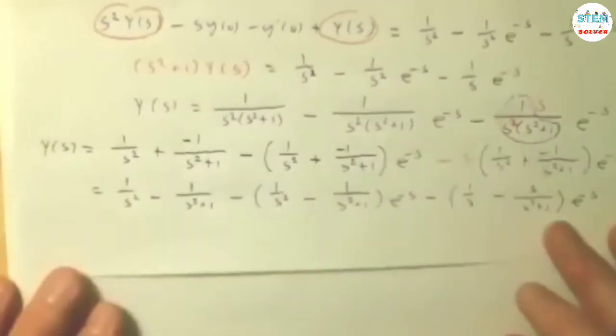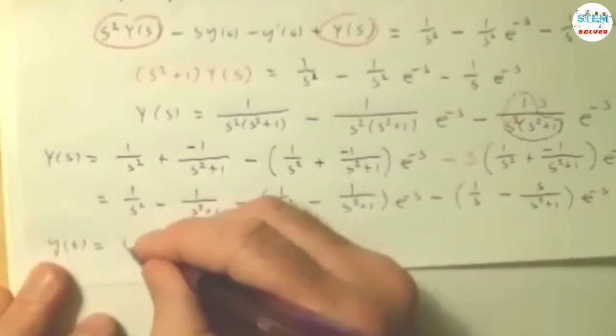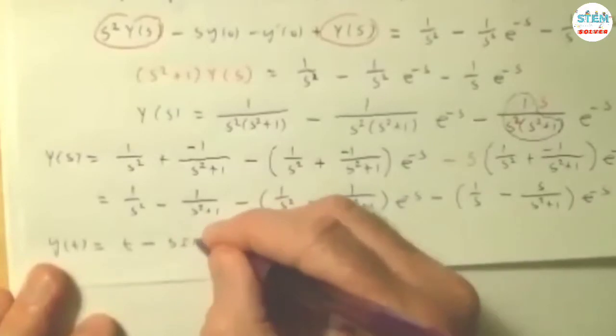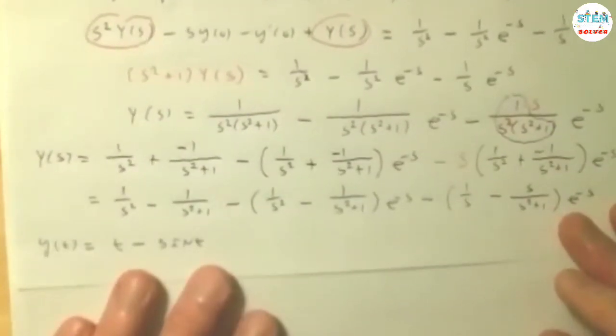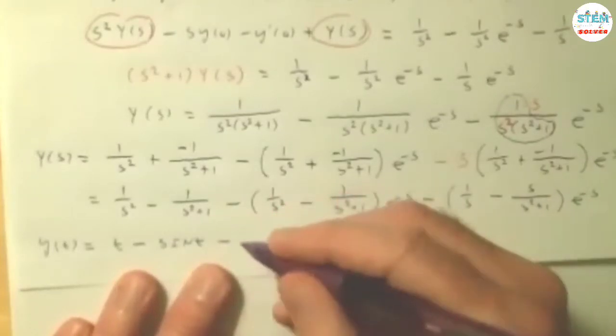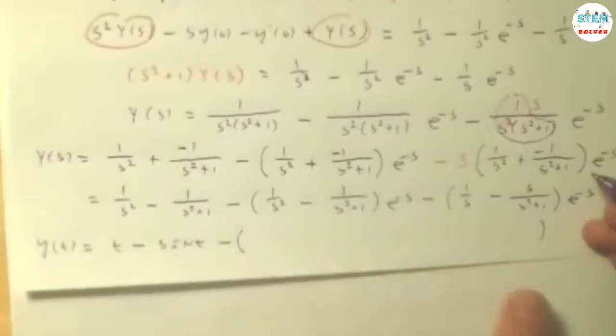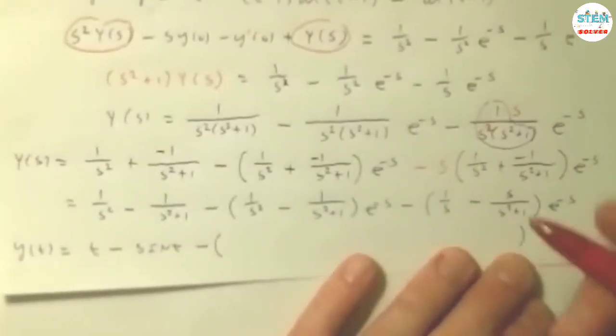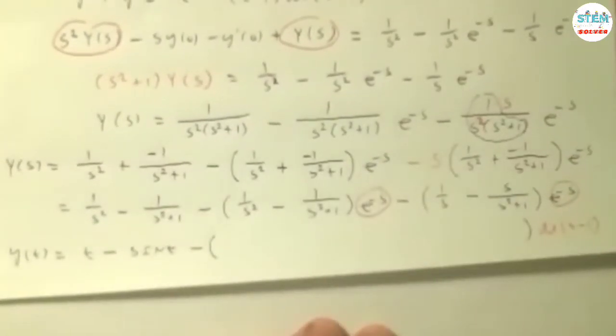At this point now, we can take the inverse Laplace transform. So here's what we get. This one, of course, is just t, then sine of t. Now I'm going to do this a little bit differently here. So I'm going to have a minus. I'm going to put all of these together because it's pretty easy to do. Because you notice what we have with the remaining, they all have this. So I know they're all going to have u of t minus 1. So I'm just going to take care of that right away. Then I'm just going to focus on these.